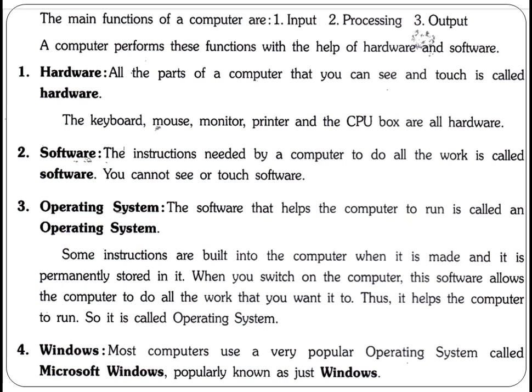The operating system software is built into the computer by the company that makes the computers. When we switch on the computer, the computer process starts automatically, and then our first screen appears automatically. All the work that we can do is because of these instructions which are already built into the computer. This software helps our computer to start a process — that is why it is called an operating system. Operate means start.